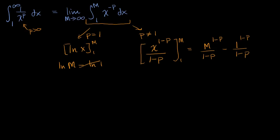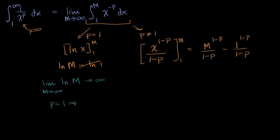Now let's take the limits. We want to take the limit as m approaches infinity. So what is the limit as m approaches infinity of the natural log of m? Well, if m goes unbounded to infinity, the natural log of that is still going to go to infinity. So when p equals one, this thing doesn't converge — it's just unbounded. So p equals one: we diverge.